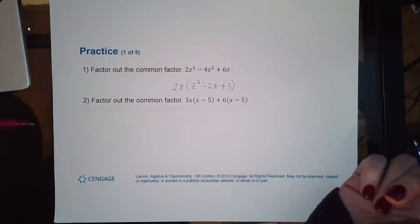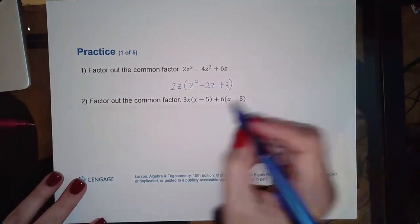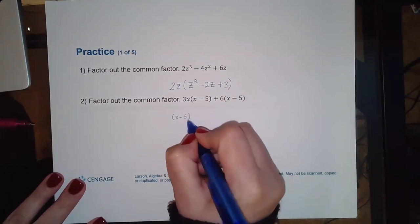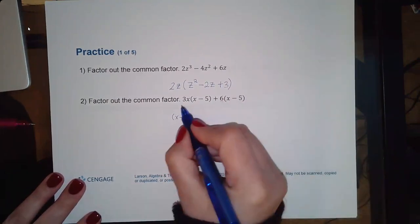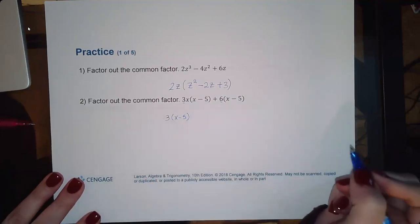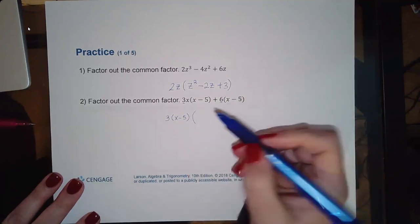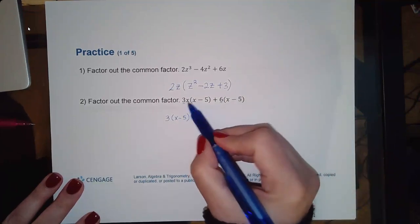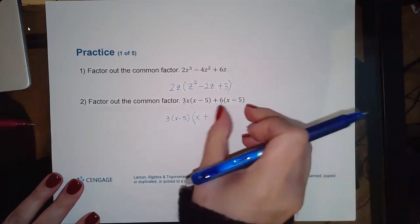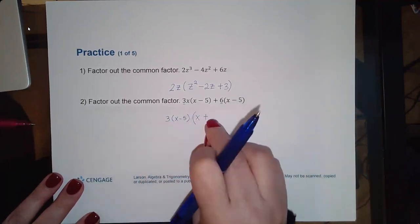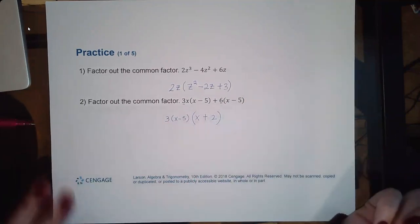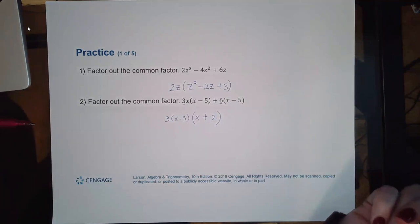Second example: factor out the common factor from 3x(x - 5) + 6(x - 5). The binomial (x - 5) is a common factor, and 3 and 6 share a common factor of 3. Factoring out 3(x - 5) leaves (x + 2), so the result is 3(x - 5)(x + 2).